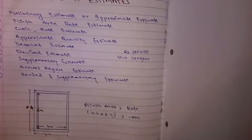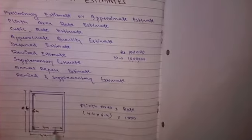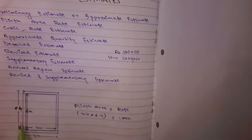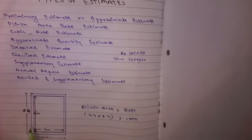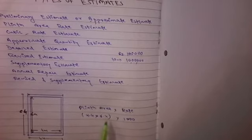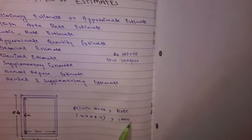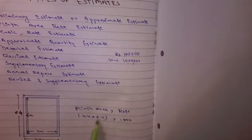...this is the room. This is 4 meter by 6 meter from inner dimensions and from outer dimensions it is 4.4 into 6.4. So we will calculate the area by multiplying both and the rate of plinth area per square meter. Plinth area is multiplied by the rate, so we will get the plinth area rate.